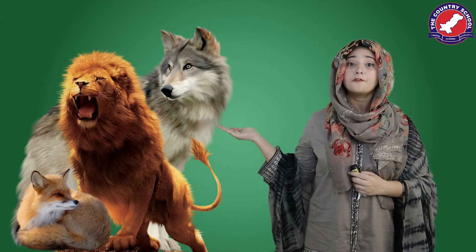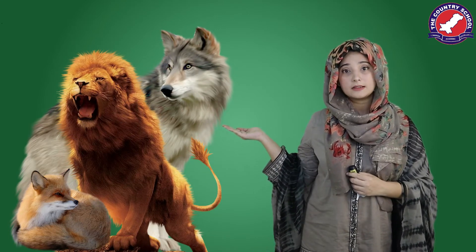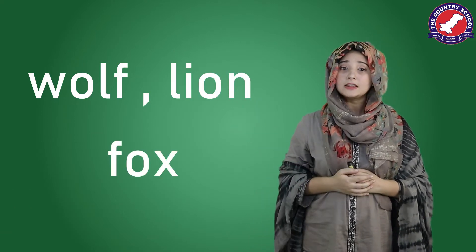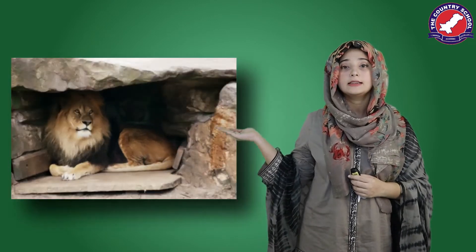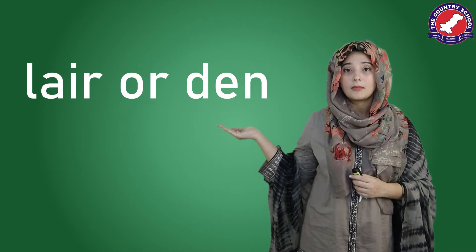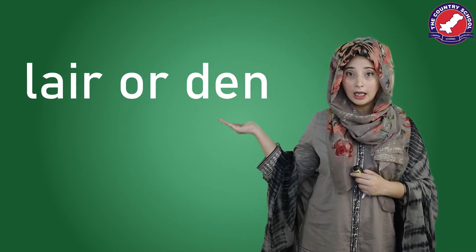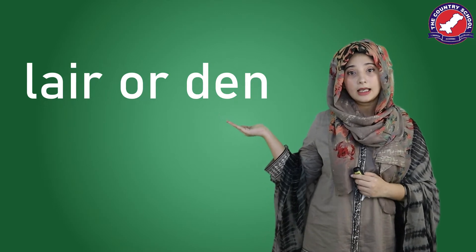Now these are pictures of three animals — wolf, lion, and fox. These three animals live in a lair or den. In ke homes ko hum lair kahte hain ya phir den kahte hain — l, a, i, r — lair; d, e, n — den.